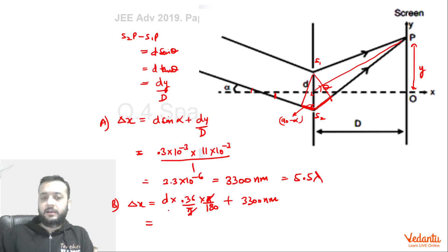So if you find this, pi will cancel. d y is 0.3 into 10 to the power minus 3, and this is 0.36 by 180. So this will become, multiplying by 2, 0.6 by 1000, so 6 into 10 to the power minus 7, which means 600 nanometers.